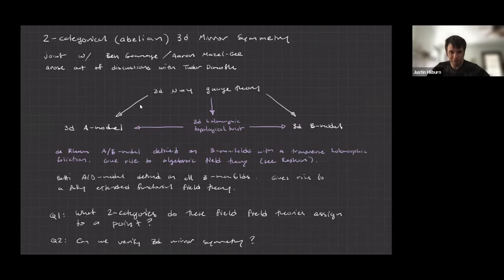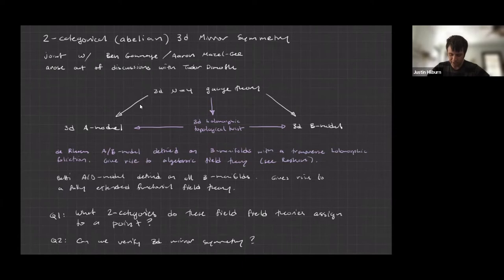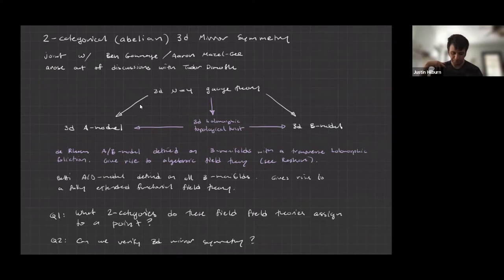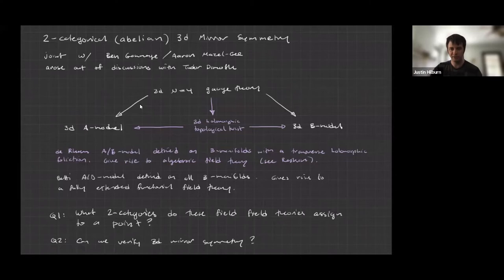Let me do a brief review. Since Matt and Sam both gave a series of lectures on these things, I'll move quickly through the beginning. If you have a 3D N=4 gauge theory, it's well known that it has two topological twists: one I'll call the 3D A-model, and the other the 3D B-model or the Rozansky-Witten twist. These 3D N=4 theories also have a further holomorphic-topological twist, only defined on manifolds admitting a transverse holomorphic foliation — for example, a three-manifold that's a product of a complex curve times a real one-manifold.